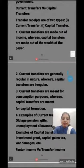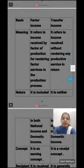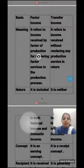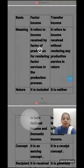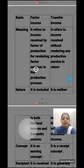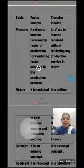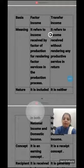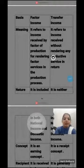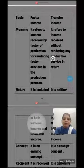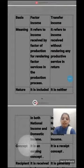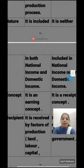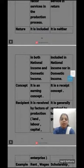Now let's look at the difference between factor income and transfer income. Factor income is the income received by the factor of production for rendering factor services in the production process. But transfer income is income received without rendering any productive service. Regarding nature, factor income is included both in national income and domestic income.